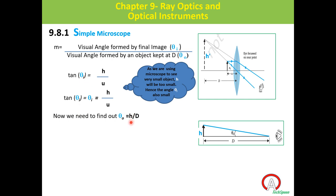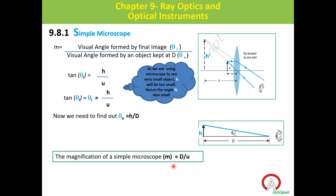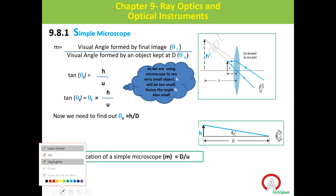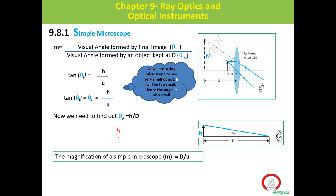Now substituting into M = θi / θ₀: we get (h/u) divided by (h/D). The h cancels, so magnification M = D / u. Here D is the least distance of distinct vision — 25 cm for humans — and u is the object distance. This is the general derivation formula for a simple microscope.